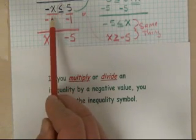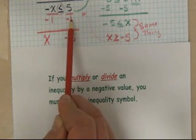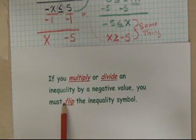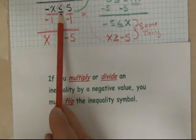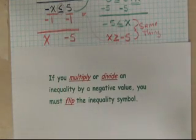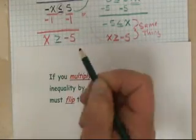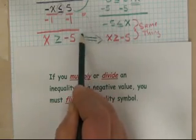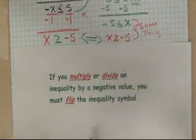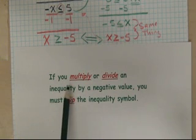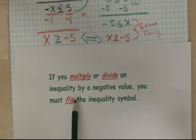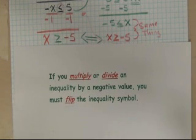So in my example here I divided both sides of my inequality by negative 1. According to this rule I must flip the inequality symbol. Here it was less than or equal to. When I flip it my new inequality symbol ends up being greater than or equal to which matches the answer I got going the long way around. So one last time if you multiply or divide an inequality by a negative value you must flip the inequality symbol in order to reach the correct solution.